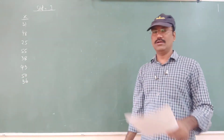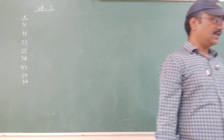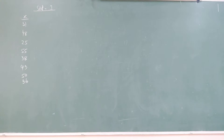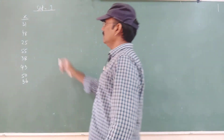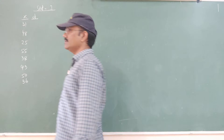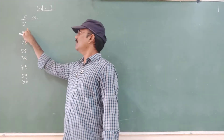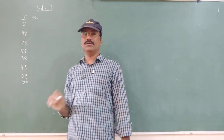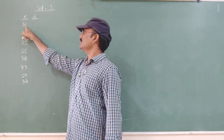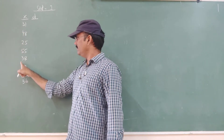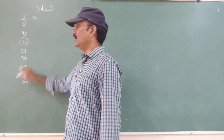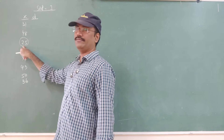Using these X variables, we first find D. What is D? D means from the given numbers, you take the smallest number. Which one is the small number in this question? 25 is the smallest number. Now subtract 25 from all numbers.